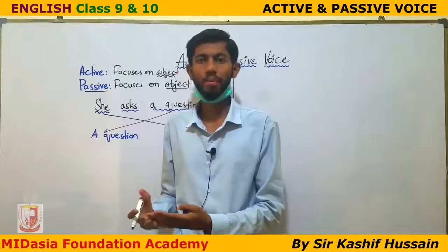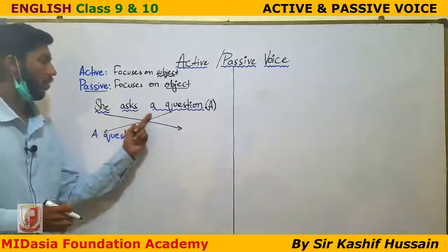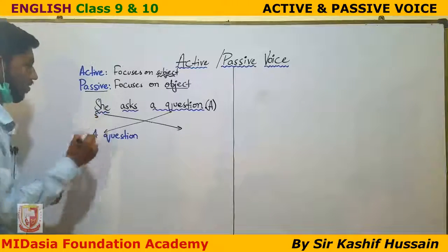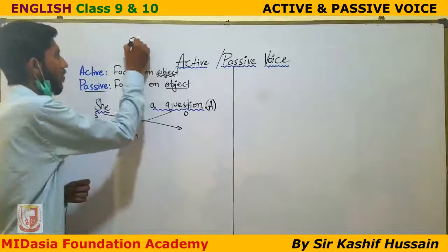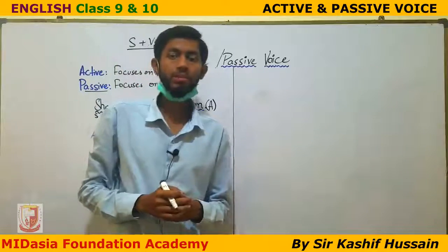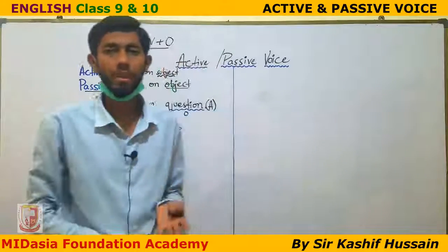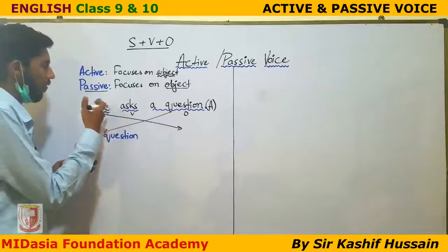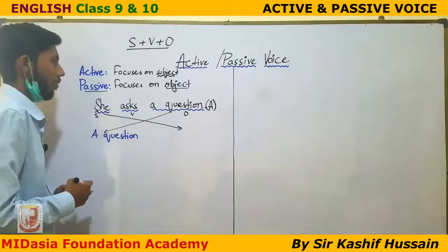Now let's look at an example: 'She asked a question.' Let me label it — 'She' is the subject, 'asked' is the verb, and 'a question' is the object. Just remember these three things: in every sentence, subject, verb, and object are present. In active voice, the structure is: subject, then verb, then object.